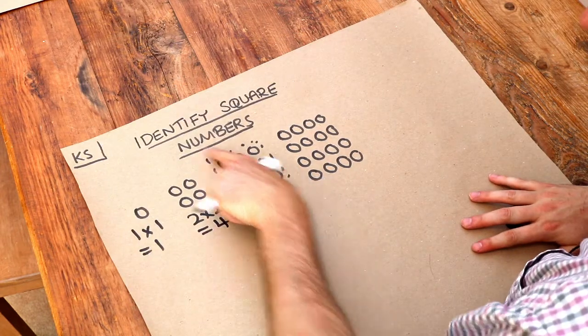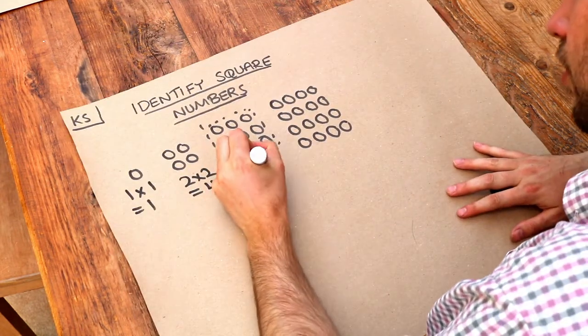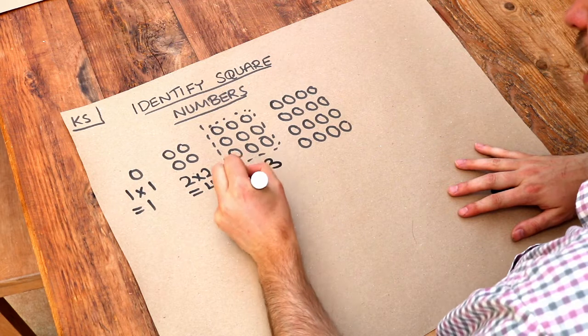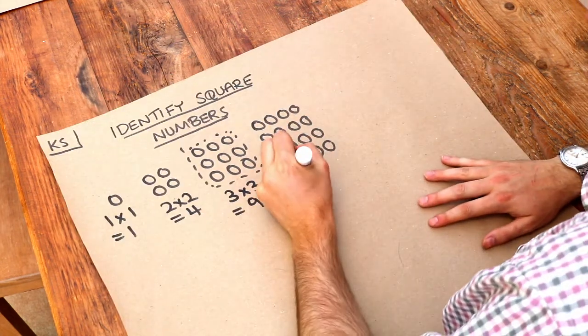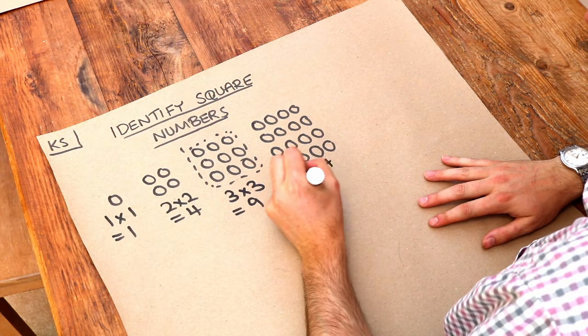Here we've got three lots of three, so that's three times three is nine. Here we've got four lots of four, four times four is equal to sixteen.